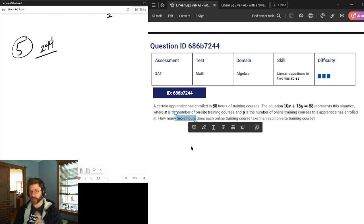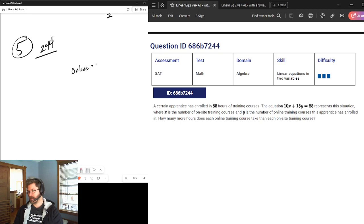How many more hours? Not how many hours, but how many more? So, we're going to take the difference between something. What does each online training course take than each on-site? So, if on-line training courses are y, on-line is y, on-site is x. And I want to know how much more, how many more hours are they? So, the hours of on-line minus the on-site.